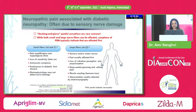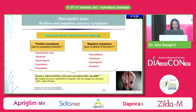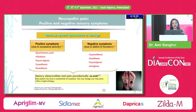With large fiber involvement, sensory and motor nerves are affected — generally the feet first. There is loss of vibration, perception and proprioception, deep-seated gnawing and aching pain, muscle wasting, and these abnormalities can be detected by electromyography. Symptoms can be positive — due to excessive activity like spontaneous pain, allodynia, hyperalgesia, dysesthesia or paresthesias — or negative, due to deficit of function like hypoesthesia, hypoalgesia, or analgesia. Sensory abnormalities and pain can paradoxically coexist and may change over time.